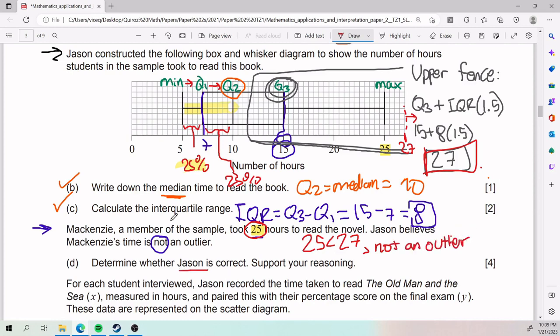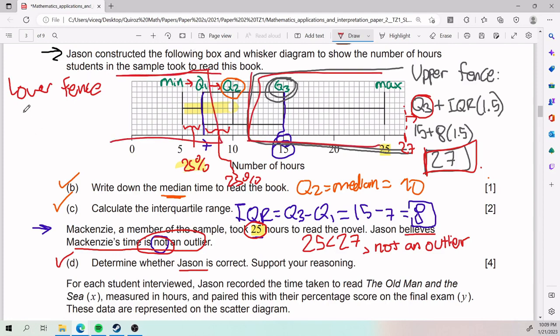And so what was Jason saying? Jason was saying that Jason believes that McKenzie's time is not an outlier. That means Jason is correct. Effectively, it is not an outlier. In this case, they do not ask for the lower fence. But just so that you know, the intuition is very similar. Instead of Q3, because in this case we're looking at the right side, now we're looking at the left side. So now we take Q1, and instead of adding, we'll be subtracting. So Q1 minus IQR times 1.5. So this is just showing how to get the lower fence, helping you figure out what is an outlier. And over here, we have the upper fence for the outlier on the other end.